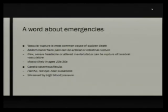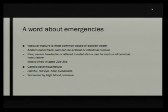In emergencies: for the vascular subtype, vascular rupture is the most common cause of death. If someone with EDS — especially vascular type — presents with acute abdominal pain, think of intestinal rupture or at least rule it out. A new severe headache or altered mental status can be rupture of cerebral vasculature — get CT or MRA. This is common in young adulthood. The carotid cavernous fistula presents as a painful red eye, the patient can hear pulsations in their head, and it's worsened by high blood pressure. These are vascular emergencies that can be life-threatening.